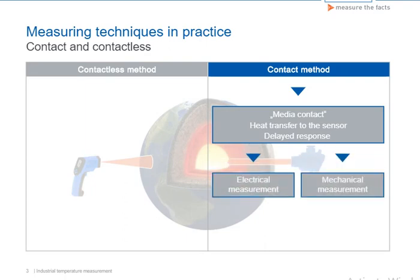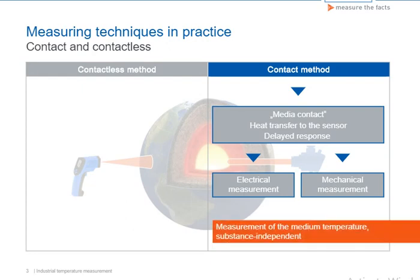In the contact method, we must always distinguish between electrical and mechanical measurement. Mechanical measuring techniques are based on the expansion or deformation of substances under the influence of temperature. Electrical measuring techniques either rely on the physical effect of thermovoltage, which occurs when two different metals are connected and heated, or use the phenomenon of the resistance of substances changing at a higher temperature. There are other processes to measure temperature, for example with electromagnetic waves or ultrasonic sound, but these are only found in niche applications.